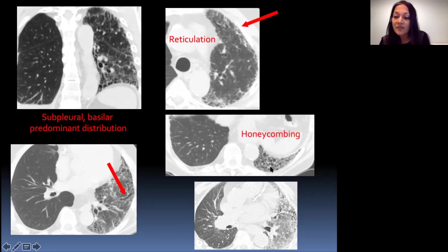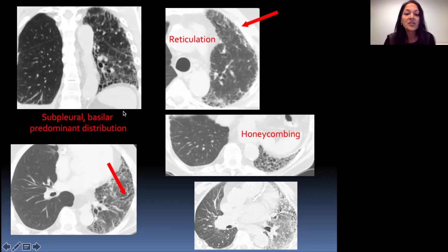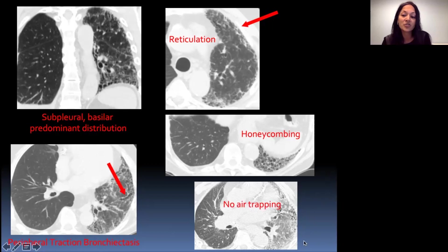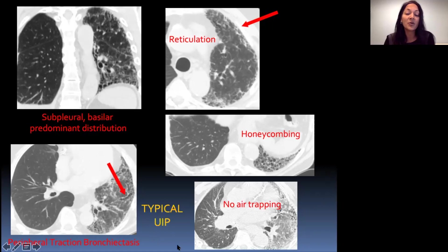In this image, you can see multiple clustered cysts due to honeycombing. On the coronal image, you can really see a nice stack of clustered cysts in a row in a subpleural location consistent with honeycombing. In the bottom left image, you can see an airway dilated out of proportion to the accompanying pulmonary artery — peripheral traction bronchiectasis. Finally, an expiration image shows no evidence of air trapping, which is a finding you can see with fibrotic HP. The sum of these findings is consistent with a typical UIP pattern.